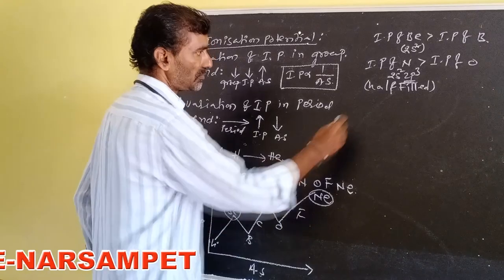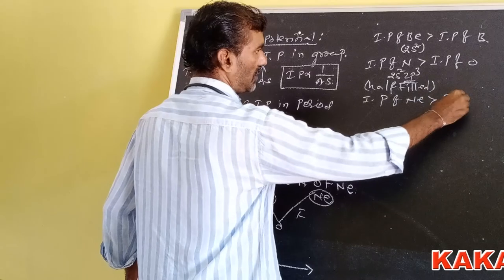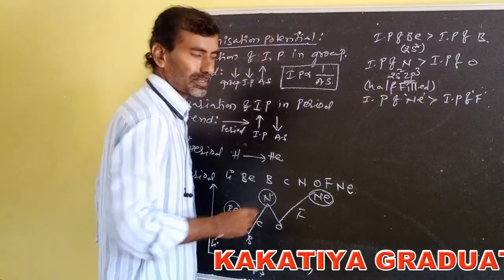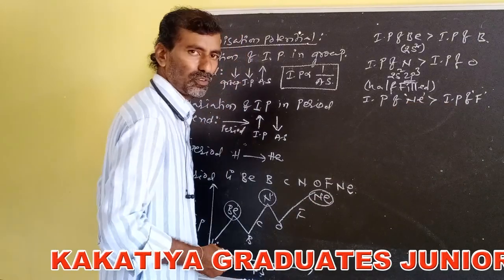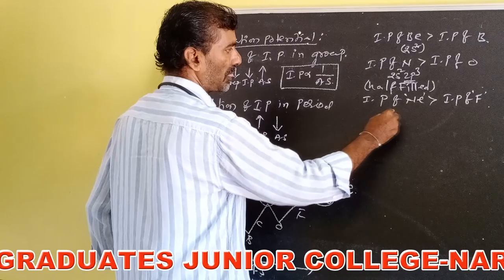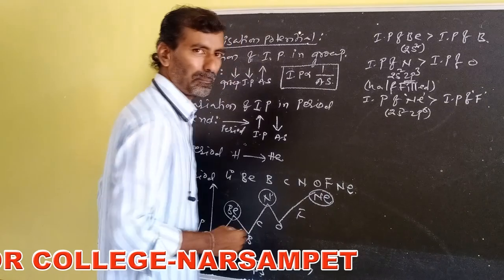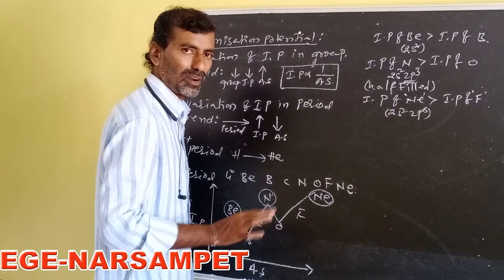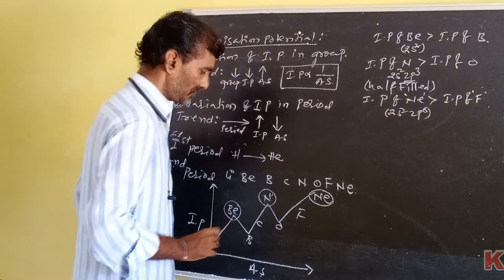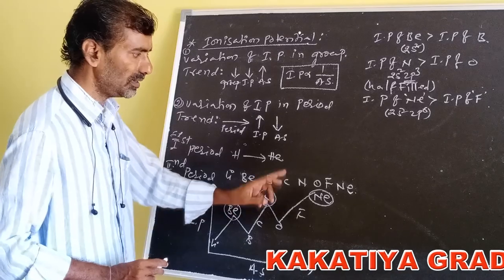Third exception: IP of neon is greater than IP of fluorine. Neon has the electron configuration 2s², 2p⁶ — a completely filled electronic configuration. This is about 2nd period ionization potential values.